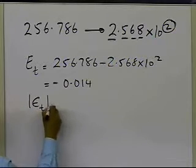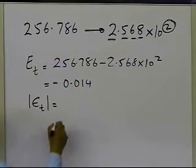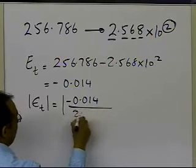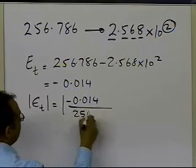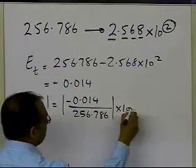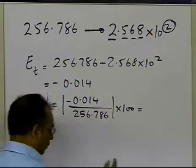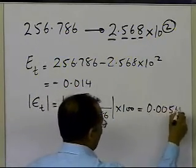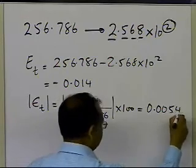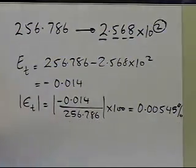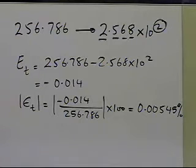What is the relative true error? The relative true error is the true error, which is 0.014, divided by the exact value, times 100. And in this case it turns out to be 0.00545 percent. That's what I get as the relative true error.